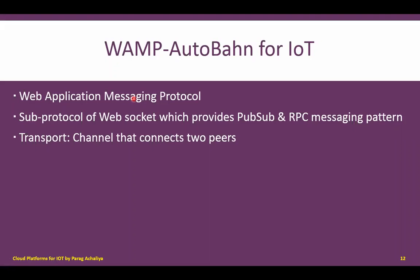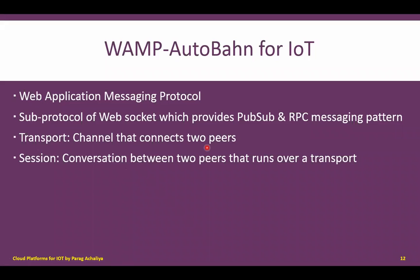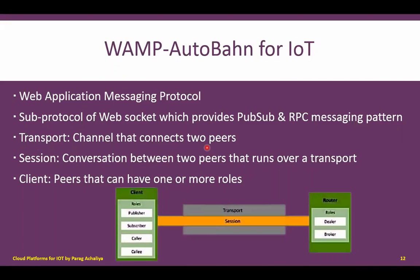In the publish-subscribe model, there is one transport, which is the channel that connects two peers. There will be one session between these two peers — the session is a conversation between two peers that runs over the transport. In the diagram, there is one client and one router. The transport connects these two, and the session is the conversation between the client and the router. The transport is responsible for connecting these two channels.